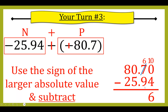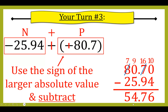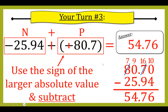I can't do zero minus four, so I borrow — the seven becomes six, the zero becomes ten, and ten minus four is six. Can't do six minus nine, so I need to borrow — but the next digit is zero, so I borrow from the next column: that becomes seven, the zero becomes nine, and sixteen minus nine is seven. Nine minus five is four, and seven minus two is five. I bring down the decimal and get 54.76. The larger absolute value is 80.7, which is positive, so my final answer is positive 54.76.